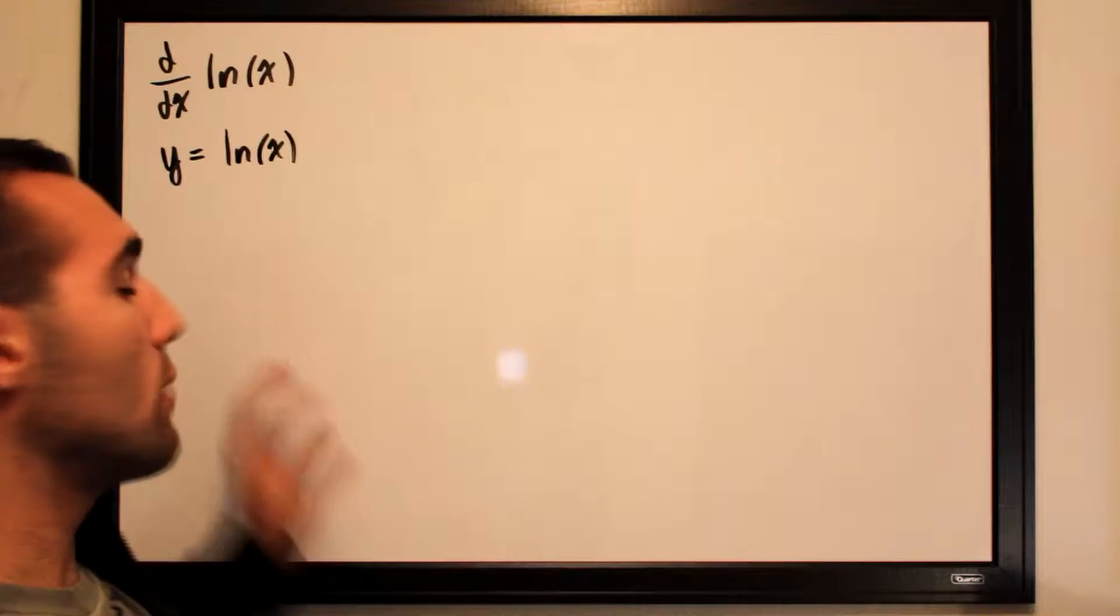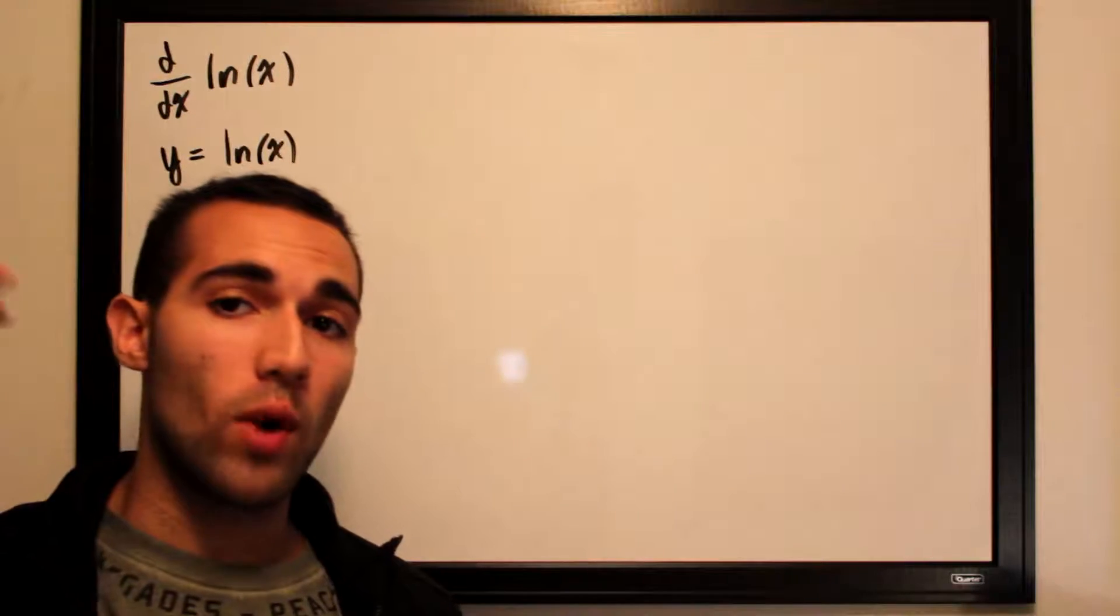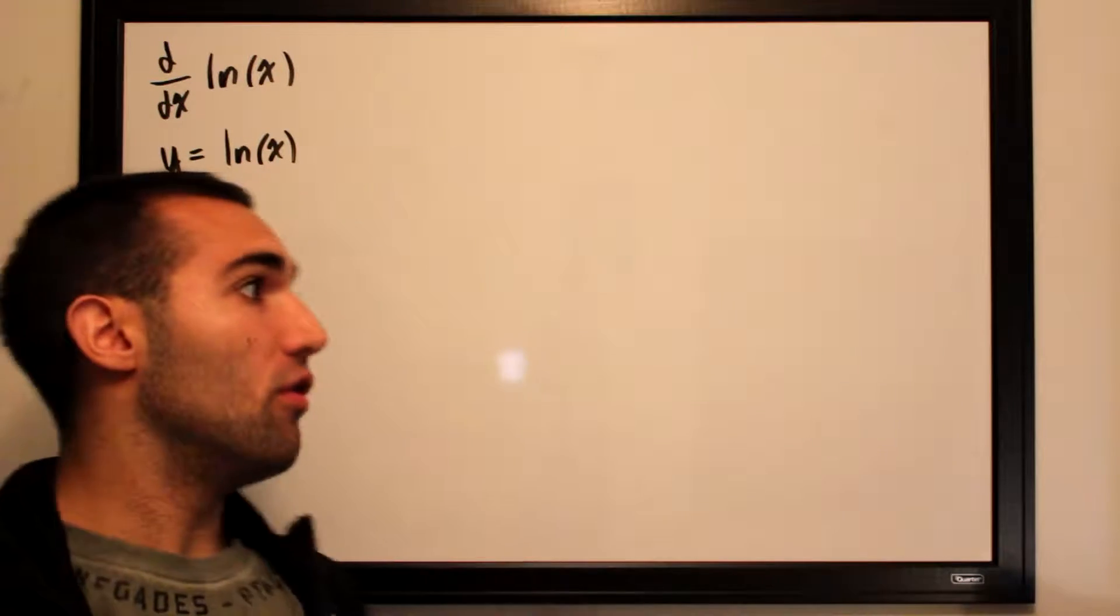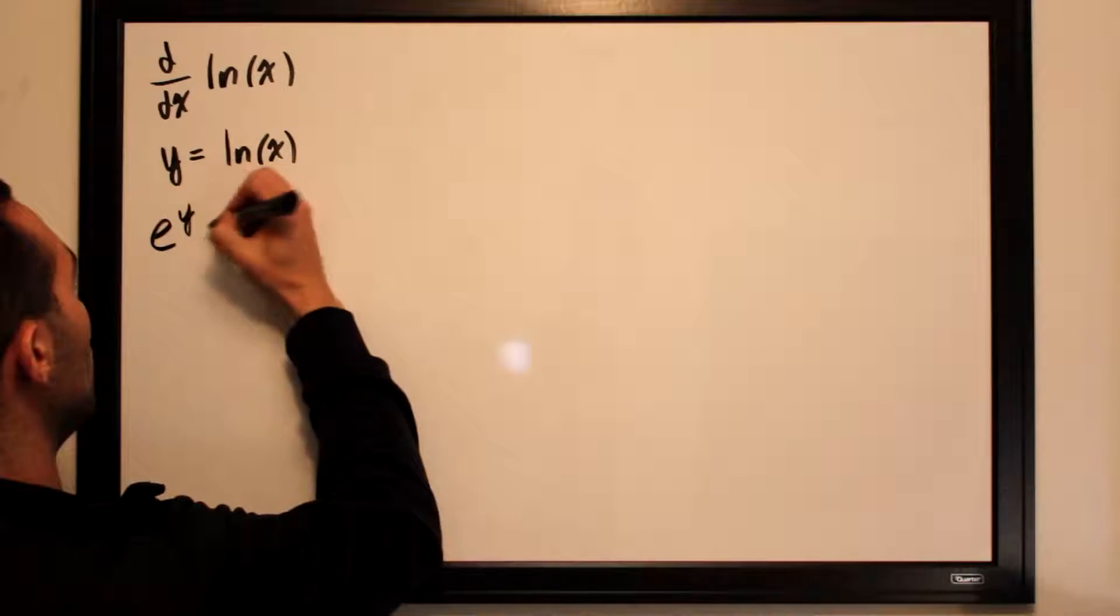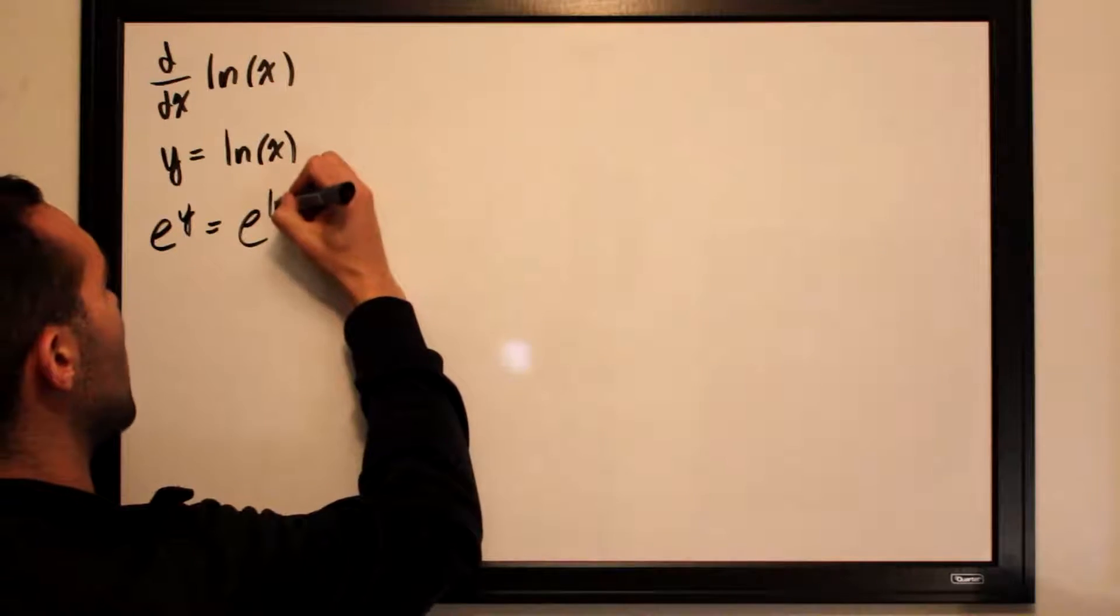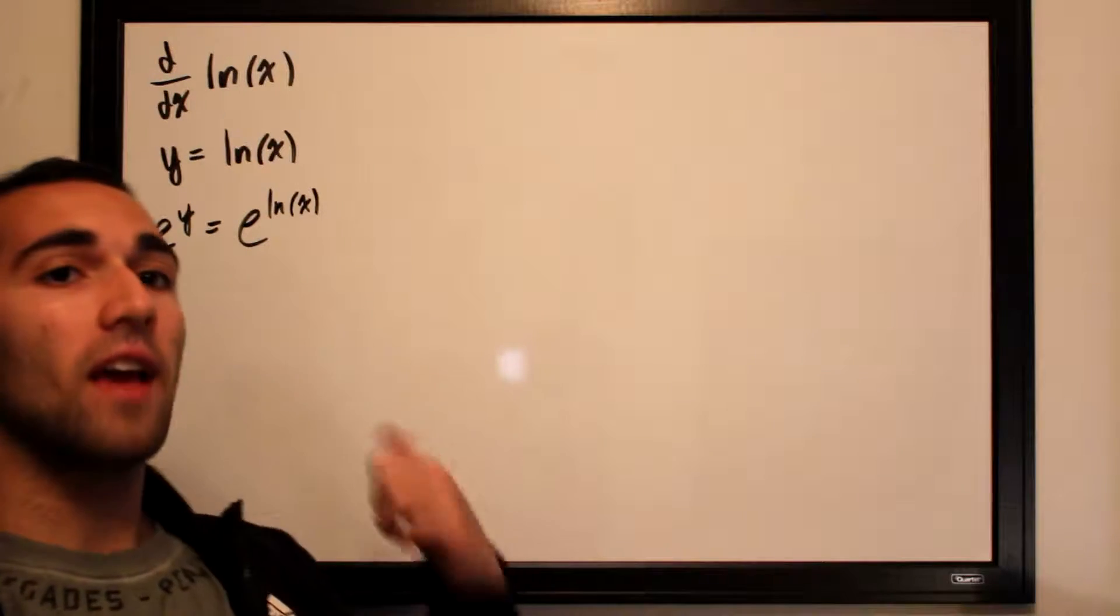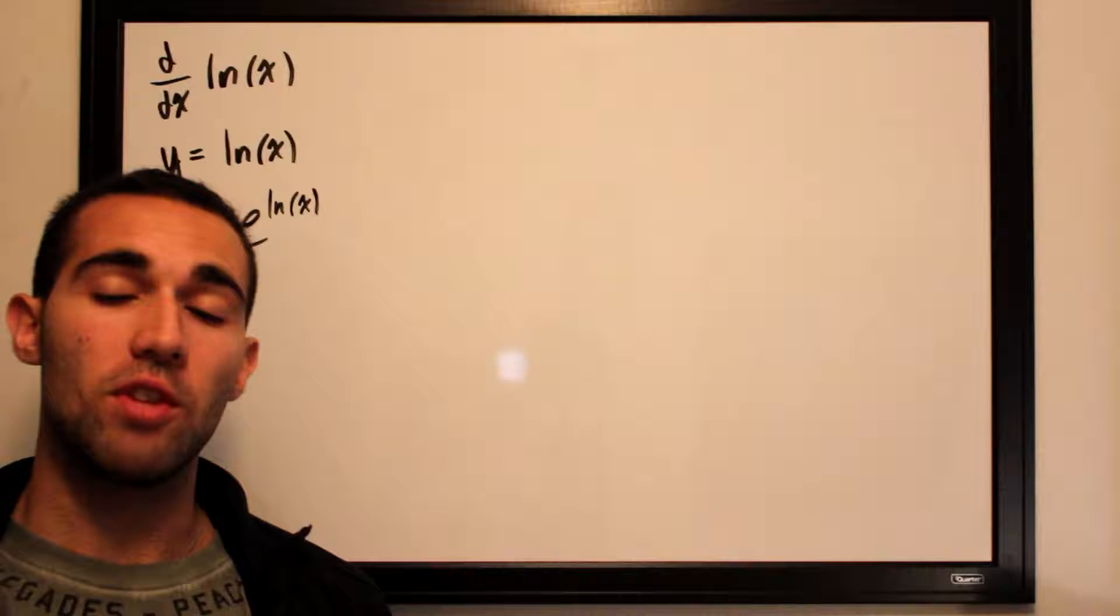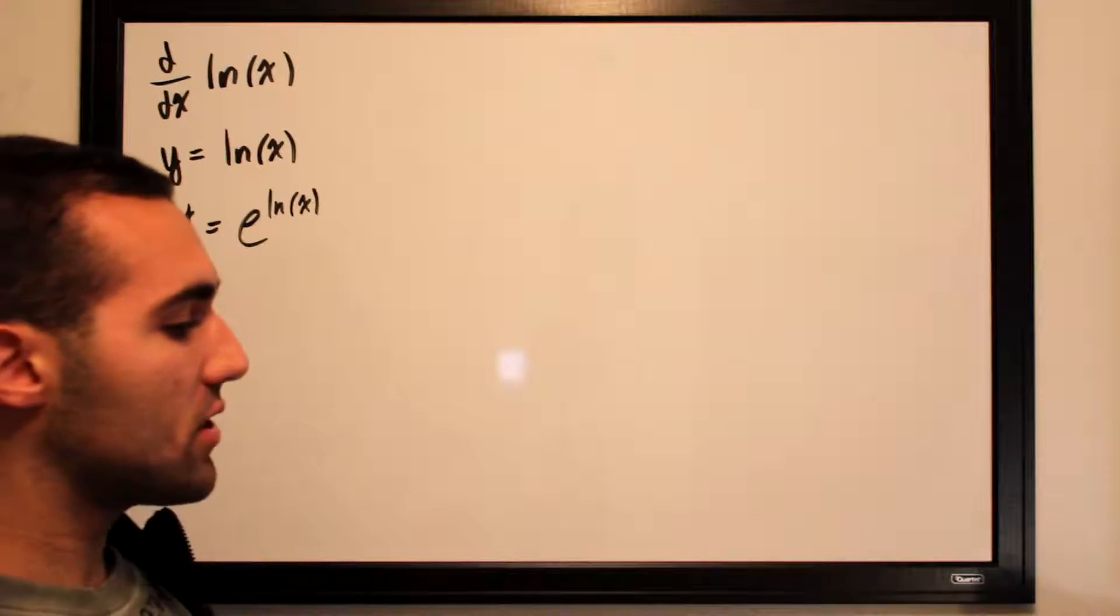So what we can do is exponentiate both sides. We're going to take e and raise it to the power of both sides of the function. So e to the y will be equal to e to the ln of x. Now e and ln are essentially inverses of each other so they cancel each other out.